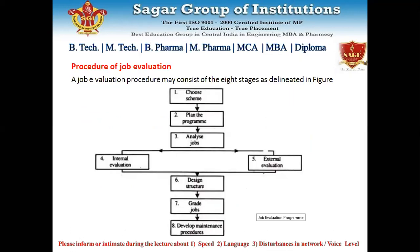Having completed the drawback part, we move to the procedure of job evaluation. We had a glimpse of this in the last lecture. It has eight points: choose the scheme, plan the program, analyze the jobs — from internal and external evaluation — then design the structure, grade the jobs, and finally develop and maintain the procedures applied.